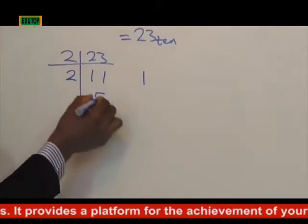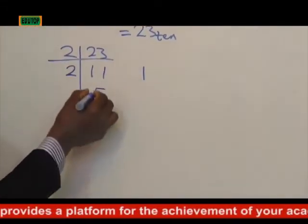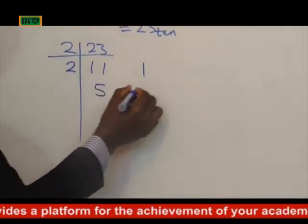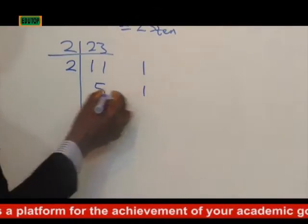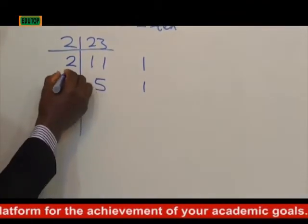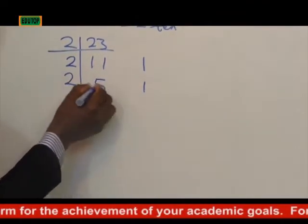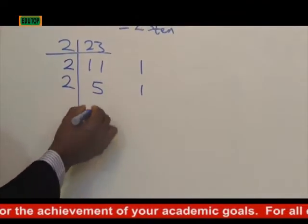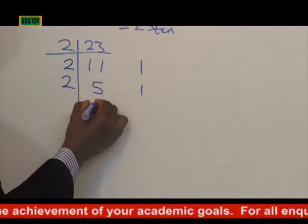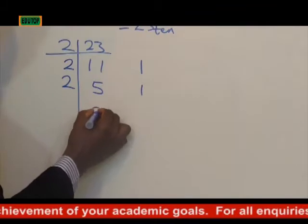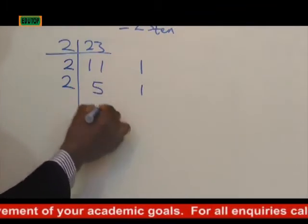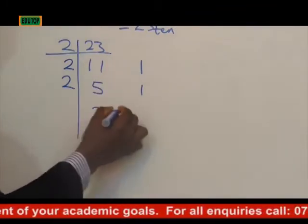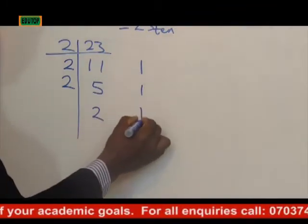2 times 5 is 10; 10 minus 10 is 0, remainder 0. Then 5 divided by 2 is 2; 2 times 2 is 4, and 5 minus 4 is 1, remainder 1.